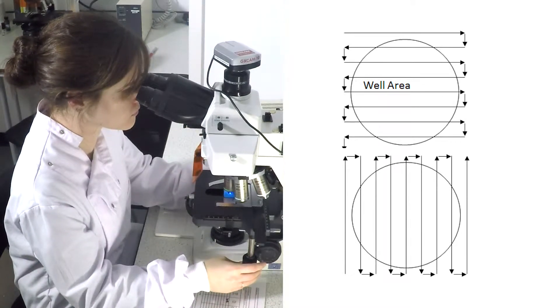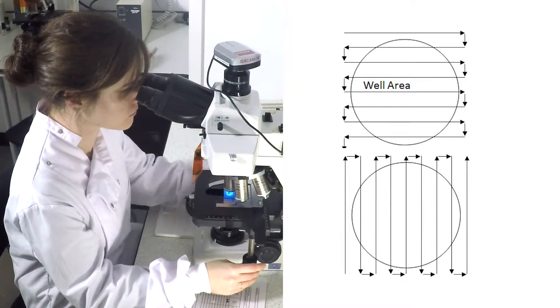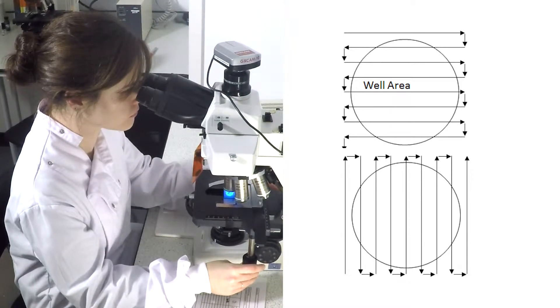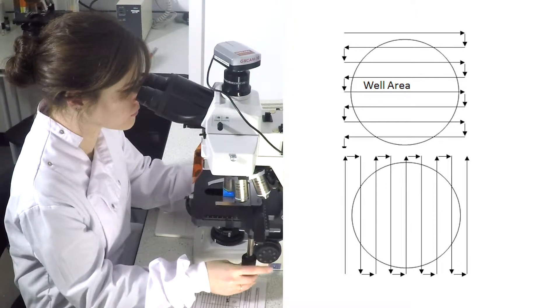Objects outside of the well area cannot be counted as it's not possible to confirm using DIC. During this step, the location of presumptive target organisms should be noted using the vernier scale.